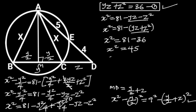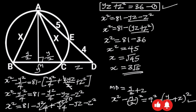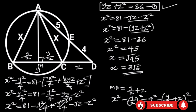Taking the square root of both sides gives us 3 root 5. Hence, X is equal to 3 root 5. Thanks for watching. If you liked this video, make sure to subscribe for more.